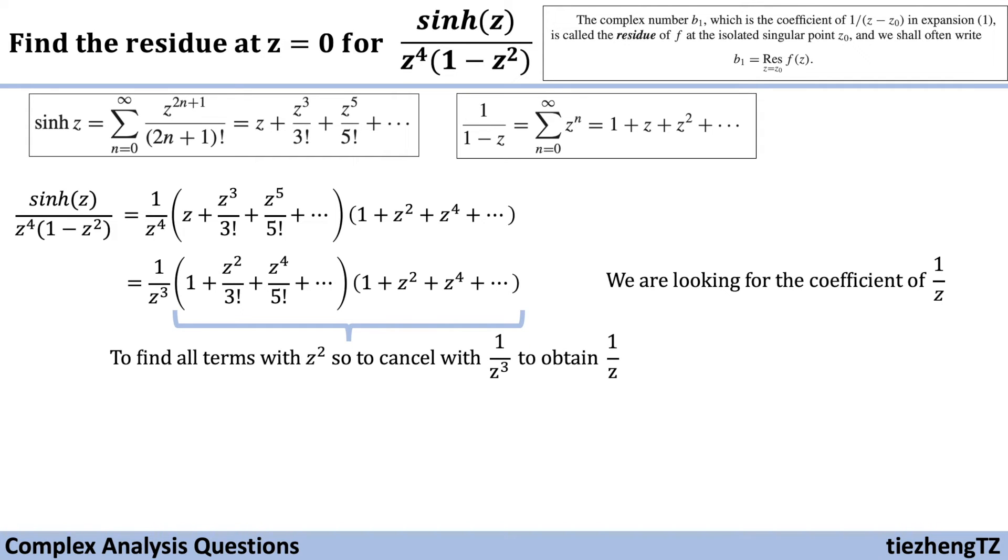From the multiplication of the two parentheses, we just need to find out terms with z squared. So z squared can be cancelled with 1 over z cubed to obtain 1 over z.